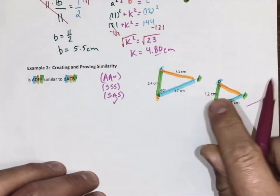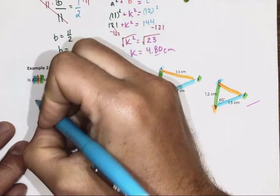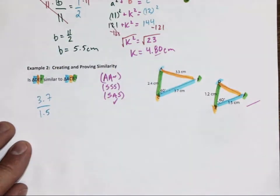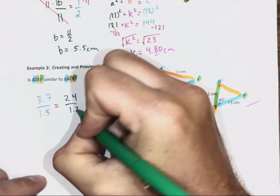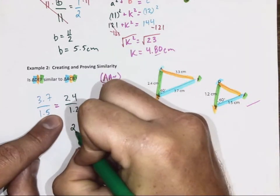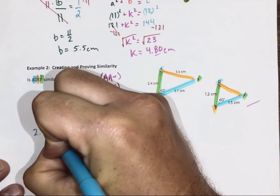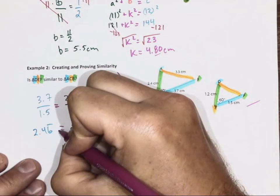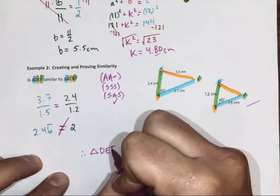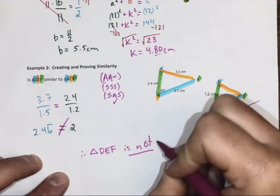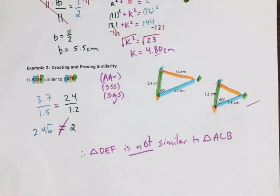So let's see. Does the ratio of my green sides match the ratio of my blue sides? Let's figure that out. So let's go large divided by small: 3.7 over 1.5, and does that equal 2.4 over 1.2? 2.4 divided by 1.2 is 2. 3.7 divided by 1.5 is 2.4666, so 2.47. So they are not equal ratios, which means therefore D.E.F is not similar to Triangle A.C.B. Looks like it, but we can't assume.